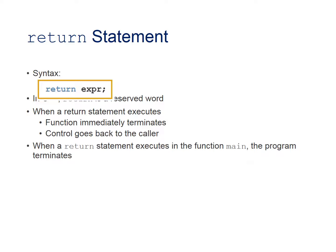Return statement. A function returns its value via the return statement, which passes this value outside the function. The syntax is the reserved word return followed by the expression you are returning. When a return statement executes, the function immediately terminates and control goes back to the caller. When a return statement executes in the function main, the program terminates.